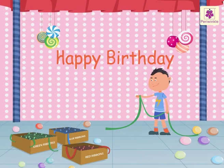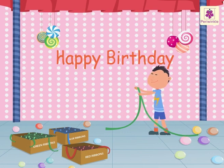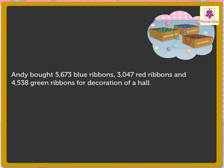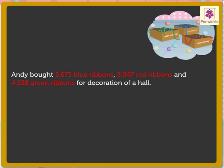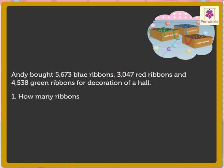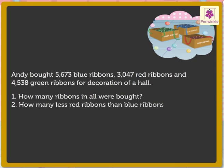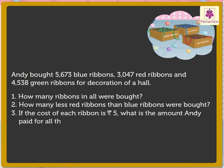Andy is decorating the hall for a birthday party. Andy bought 5673 blue ribbons, 3047 red ribbons, and 4538 green ribbons for decoration of a hall. Questions: 1) How many ribbons in all were bought? 2) How many less red ribbons than blue ribbons were bought? 3) If the cost of each ribbon is 5 rupees, what is the amount Andy paid for all the ribbons?